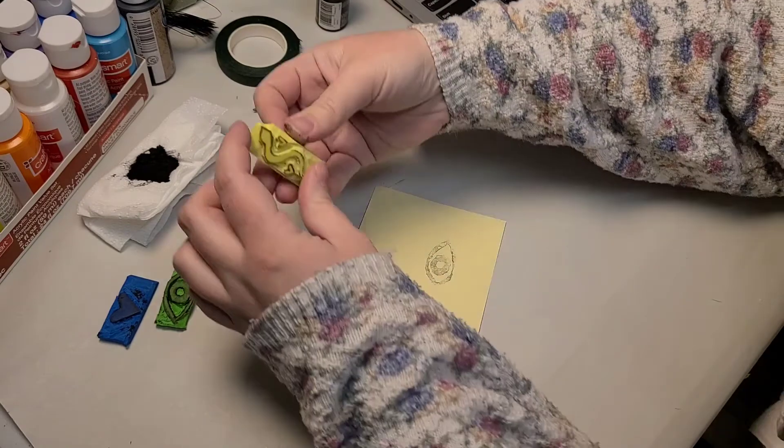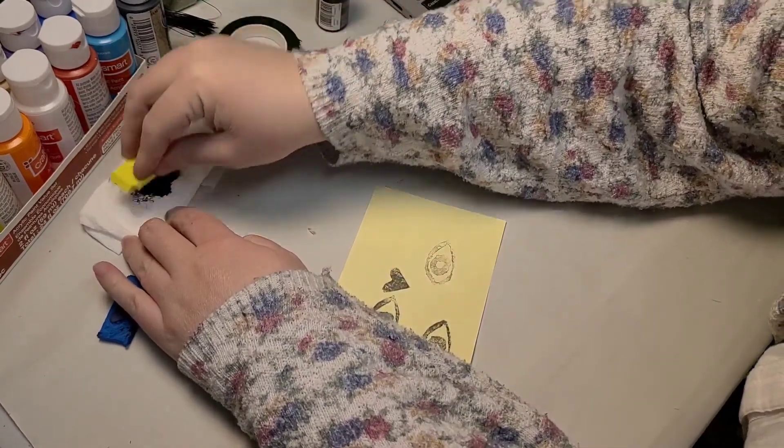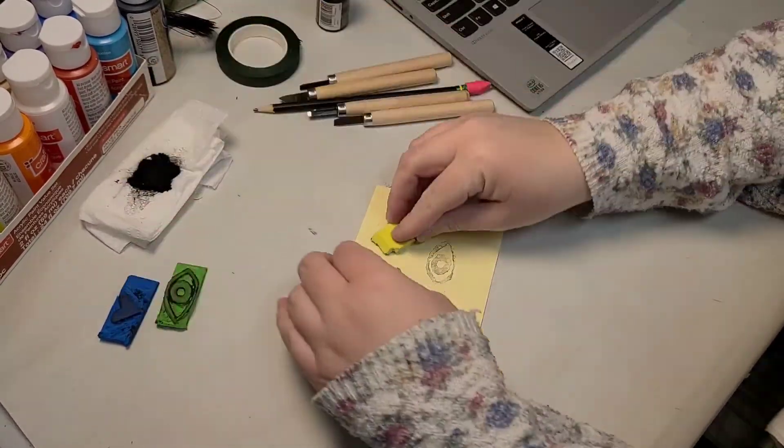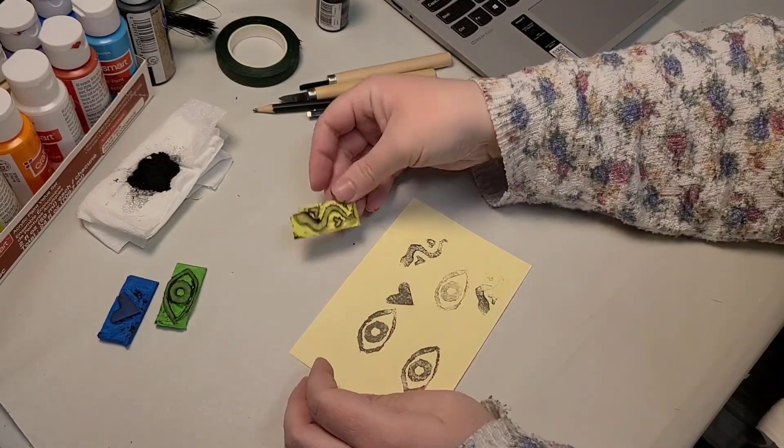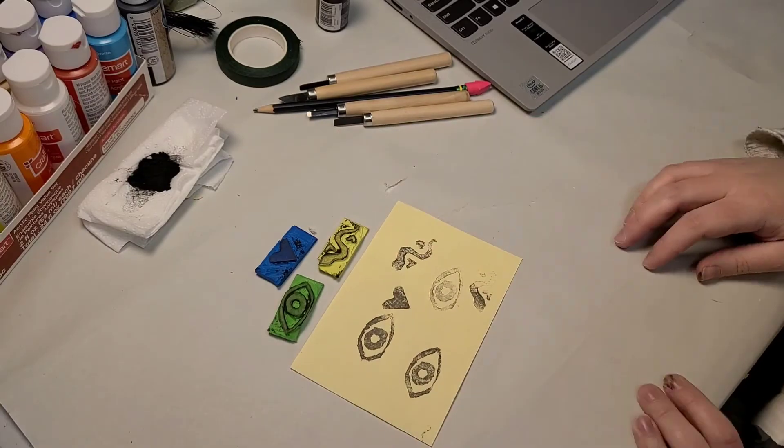And now we're just going to test out our little snake boy. And make sure that the stamp stamps the way that I want it. And ta-da! Looks good. If you like this video, please consider liking, commenting, or subscribing, or sharing it with your friends. That way they too can learn how to light things on fire.